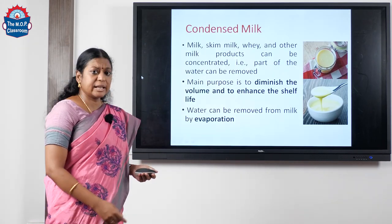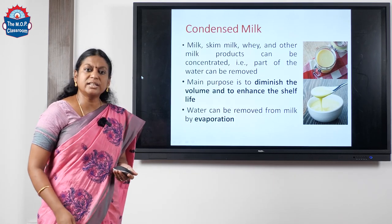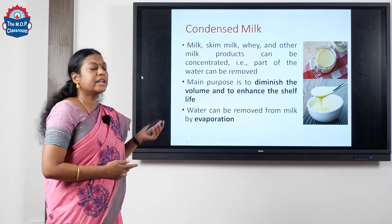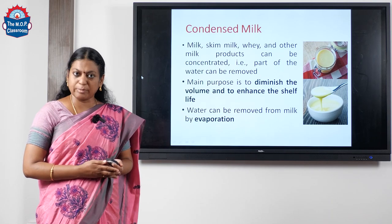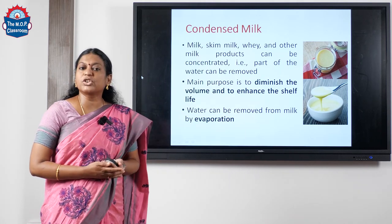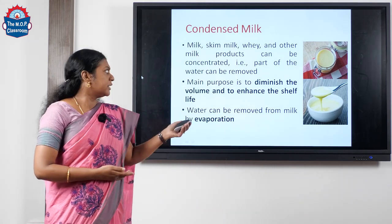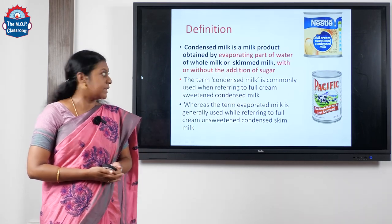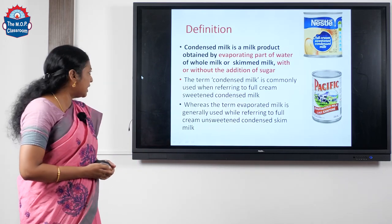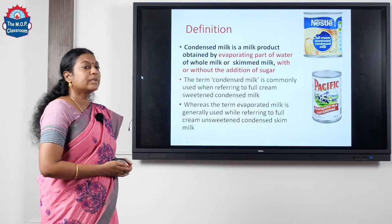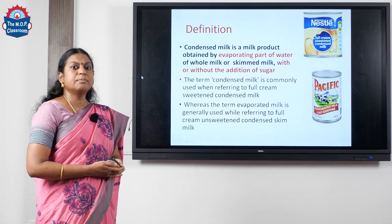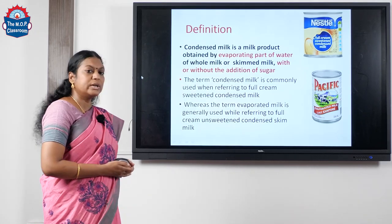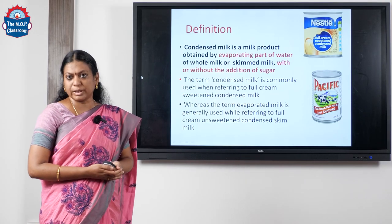Milk, skim milk, whey, and any other milk products can be concentrated by removing a part of water from it, and we can do it by the process of evaporation. Now let's look into the definition of condensed milk. Condensed milk is a milk product obtained by evaporating part of the water of whole milk or skim milk, with or without addition of sugar.